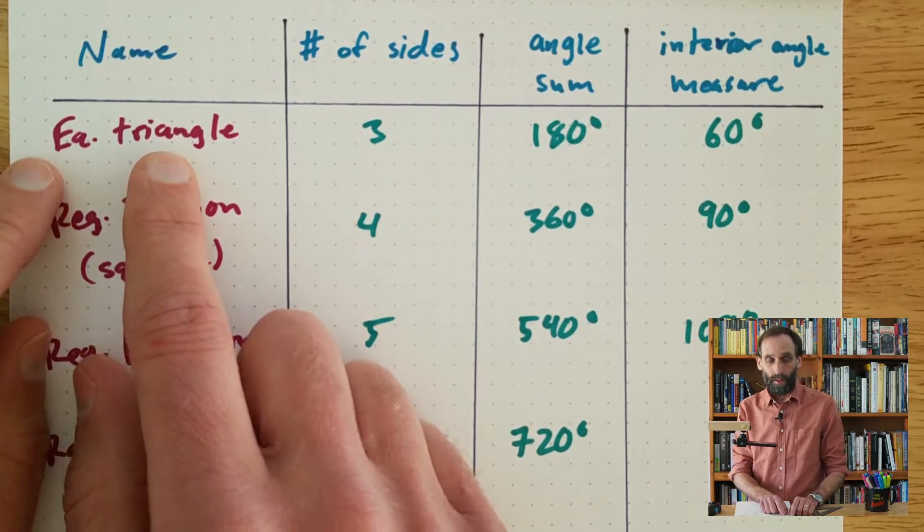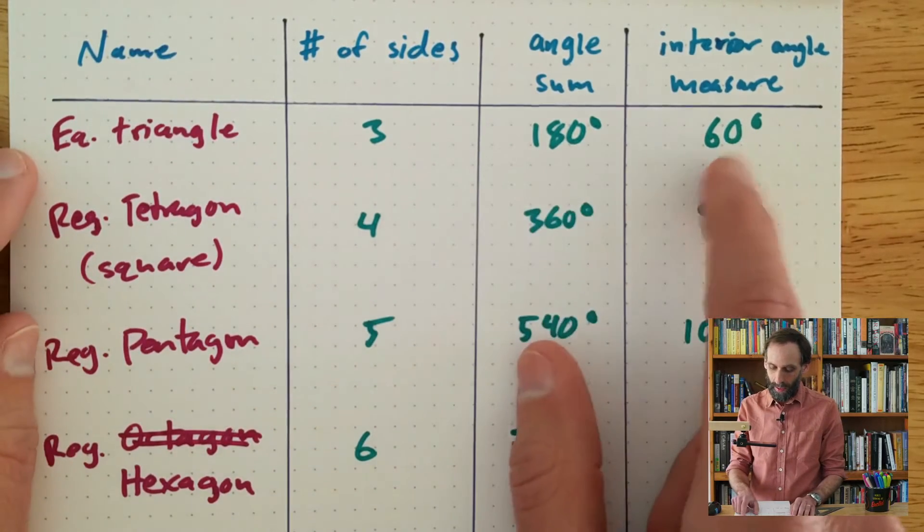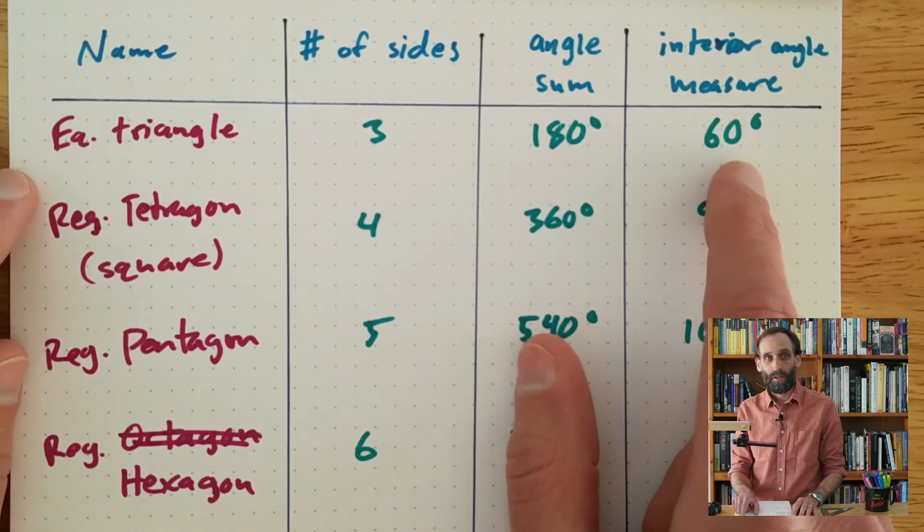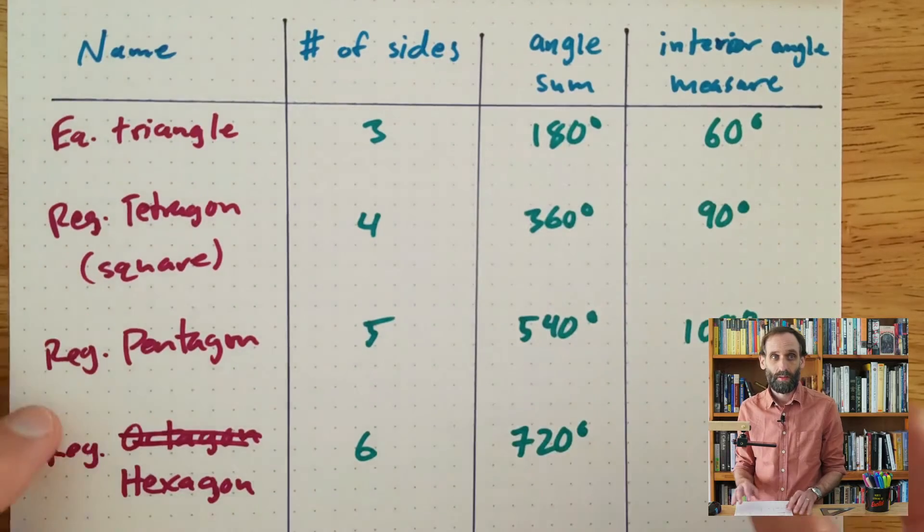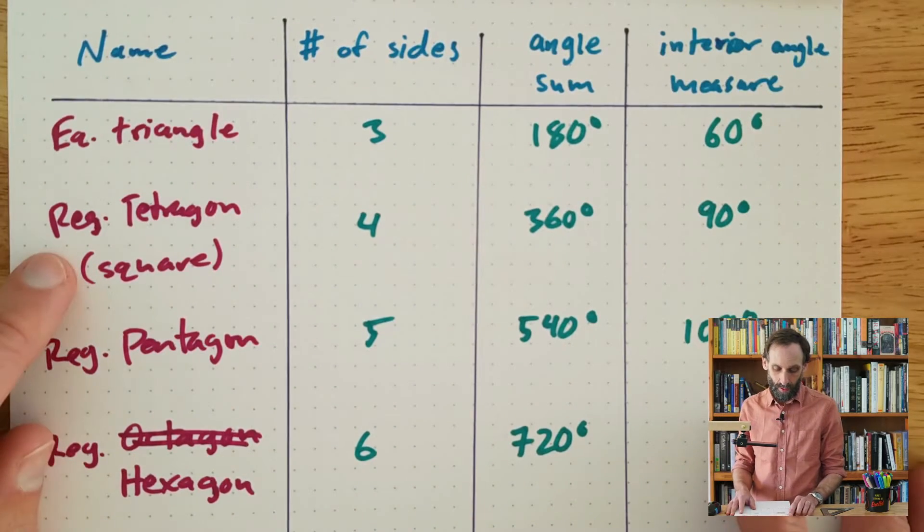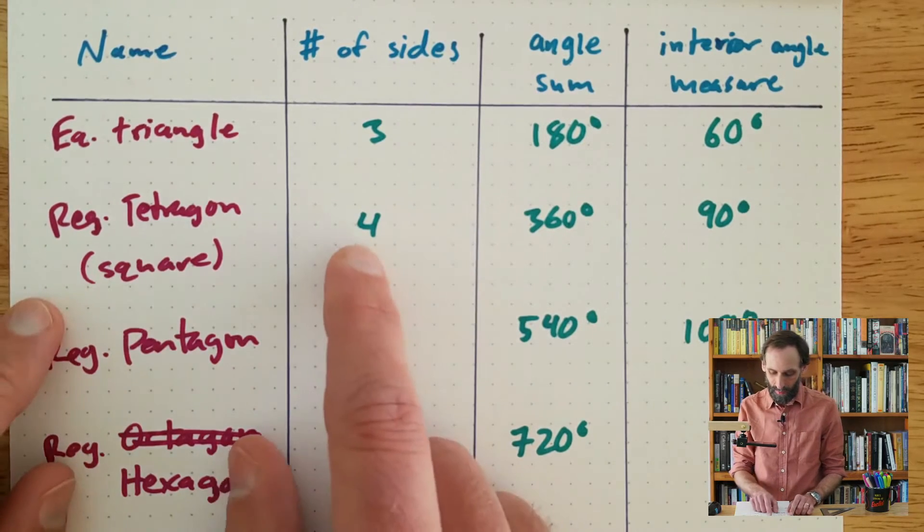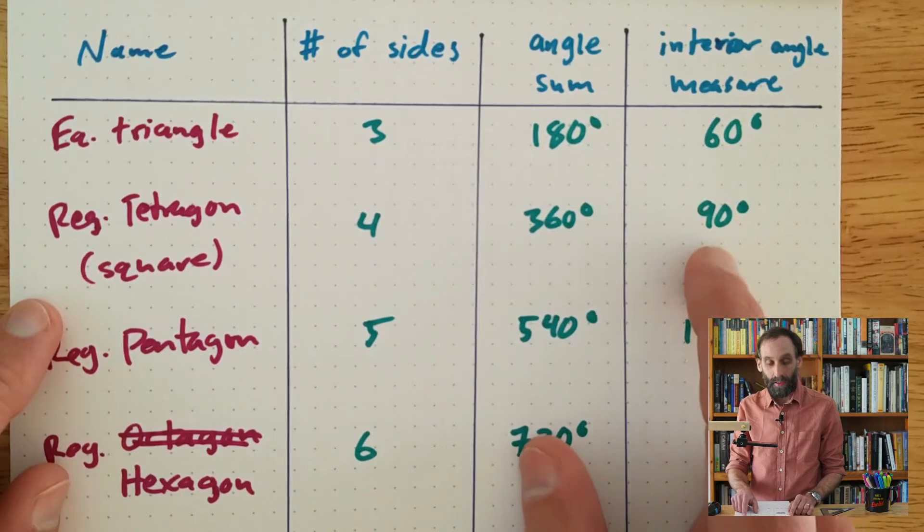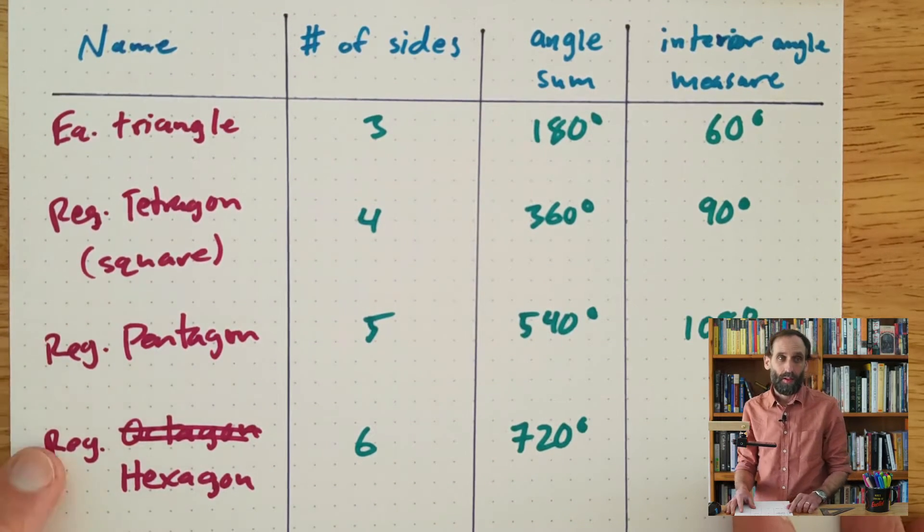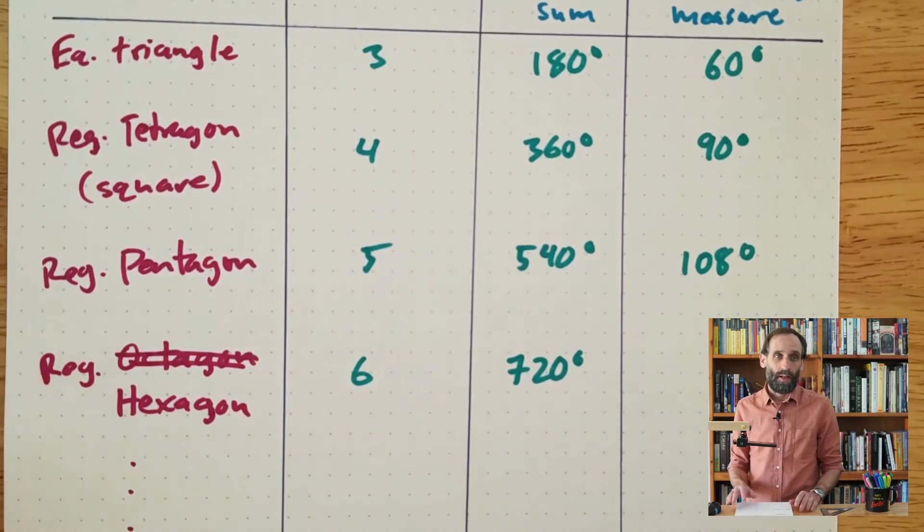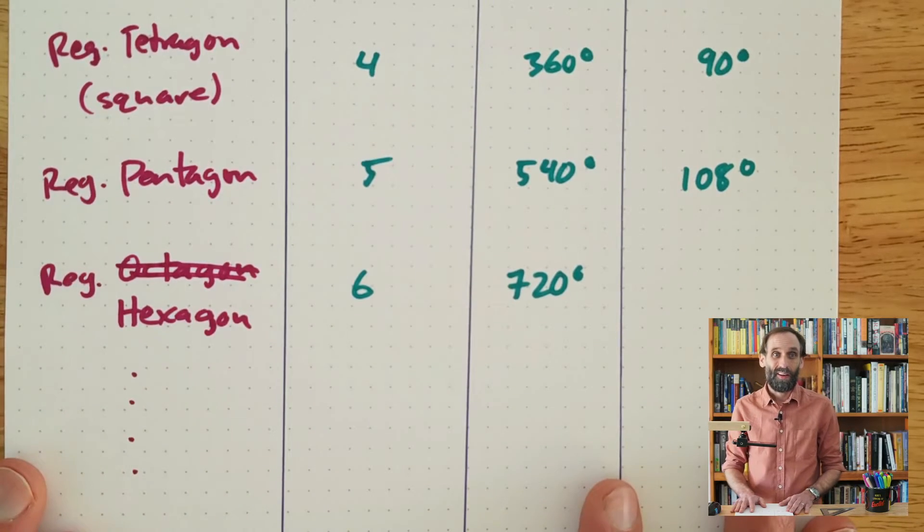For an equilateral triangle, we have three sides, angle sum of 180 degrees as any triangle does, and each interior angle measure is 60 degrees—180 divided by three angles gives us 60 degrees. For a regular tetragon, which is a square, there are four sides, angle sum of 360, and each angle is 90 degrees. We see that continued on with pentagon and hexagon, and I didn't make the whole table here because I don't want you to miss out on the fun of doing it yourself.